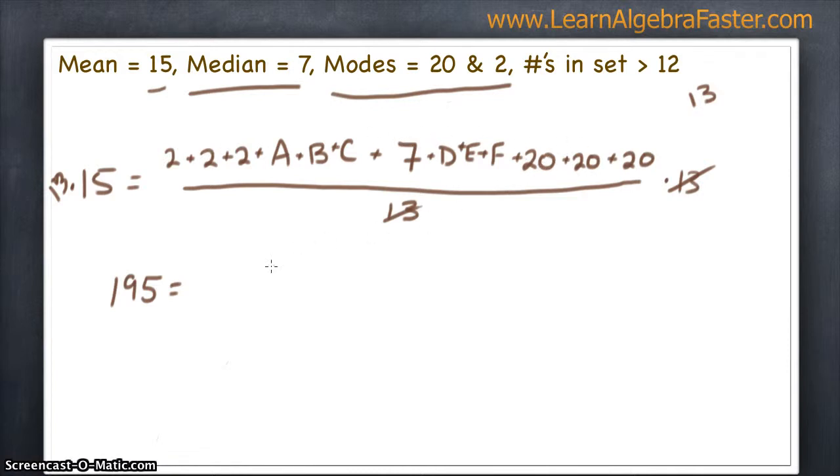So, we're left with 195 plus all this. Now, 2 plus 2 plus 2 is 6, plus 7 is 13, plus 60 is 73. So, I'm going to go ahead and simplify that in this step. But, if you add all the numbers with the calculator, you'll see that they all come up to 73. And then, we still have plus A, plus B, plus C, plus D, plus E, plus F.